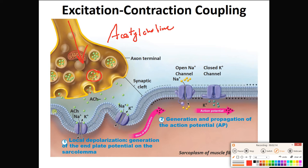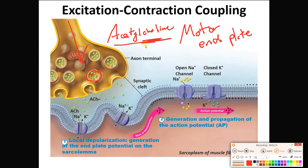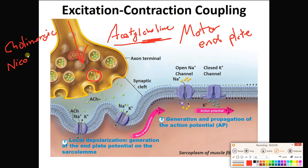This part of the skeletal muscle cell's plasma membrane is known as the motor end plate — you met it in lab, so that should be familiar to you. It is going to be studded with receptors for acetylcholine. Acetylcholine receptors are known as cholinergic receptors because they work with acetylcholine. And we remember from the autonomic nervous system lecture that this type of receptor is called a nicotinic receptor, because it responds to nicotine as well.